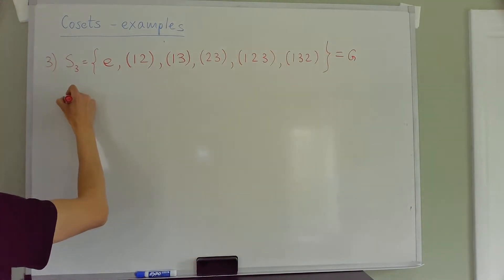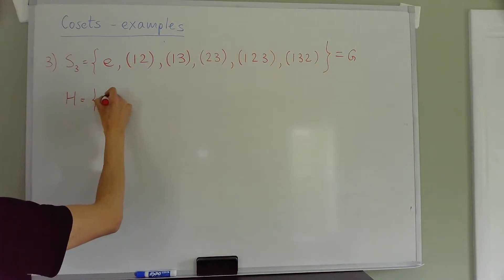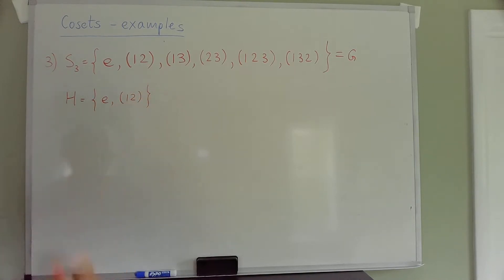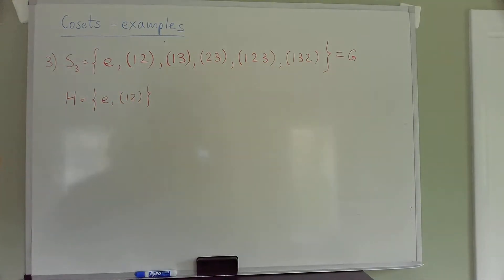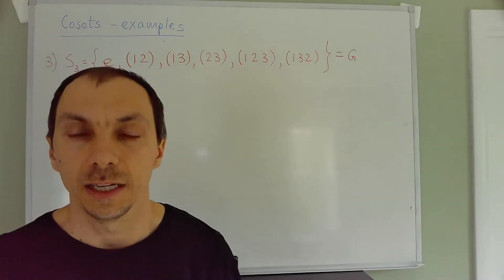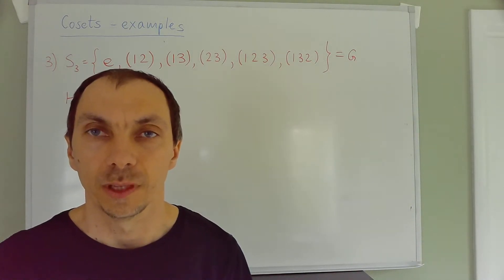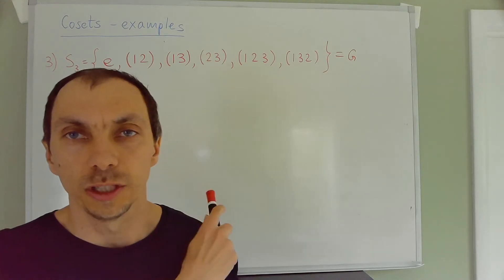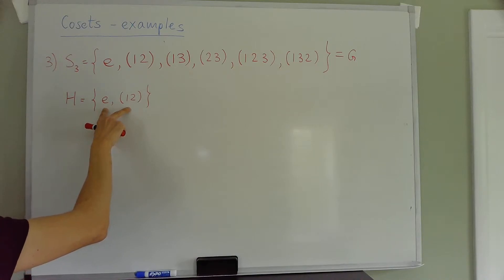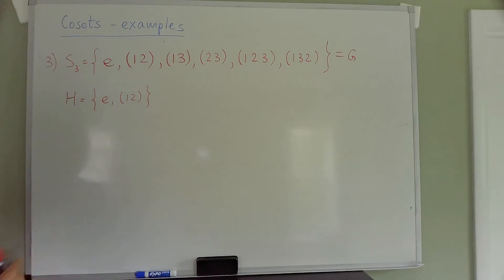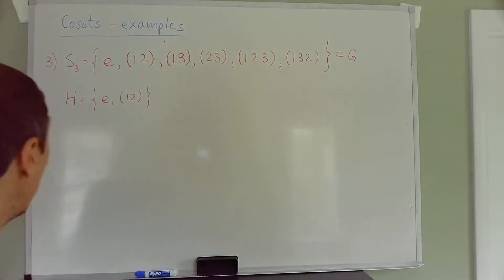Let G = S₃ and H = {e, (1 2)}. To confirm this is a subgroup: it's closed under the operation since (1 2)² = e; the identity is present; and (1 2) is its own inverse. So yes, this is a subgroup.